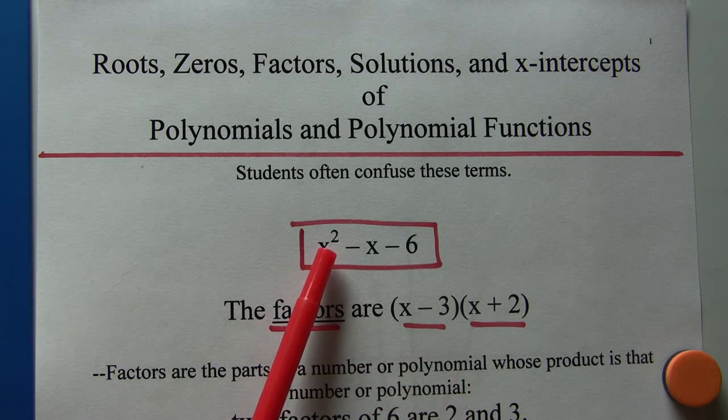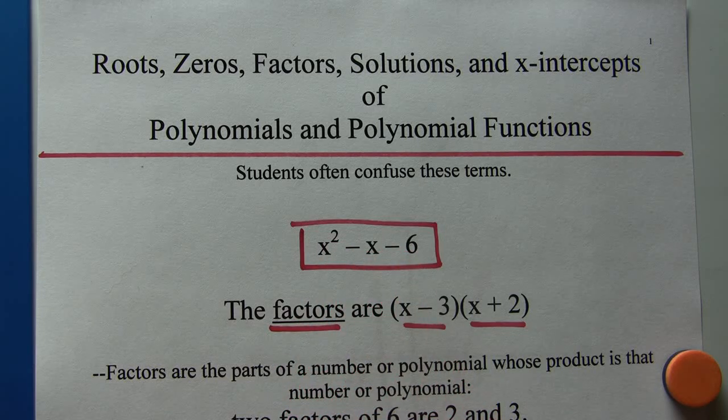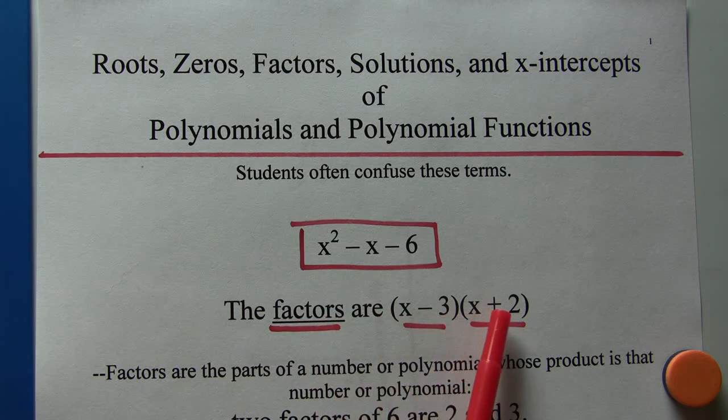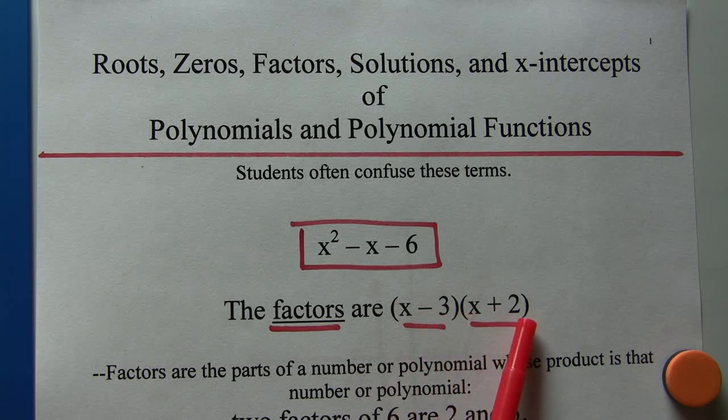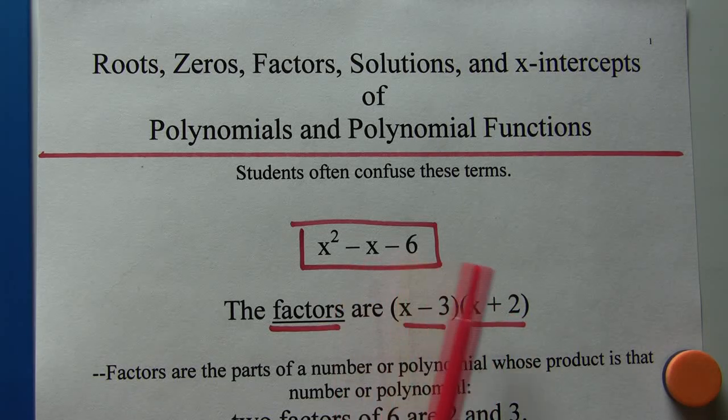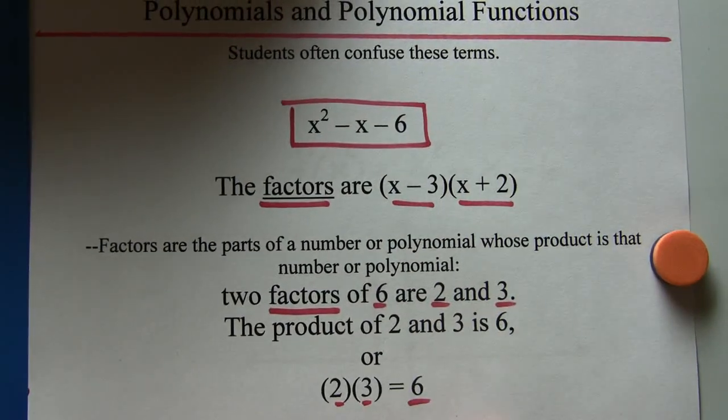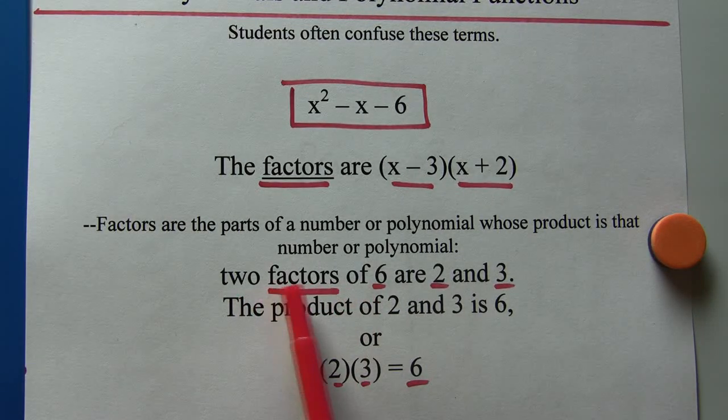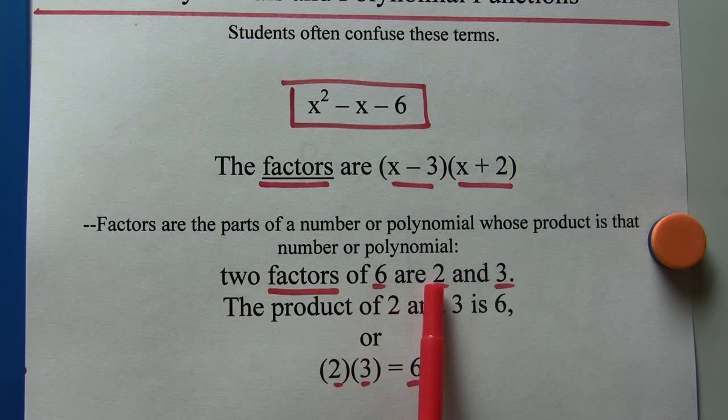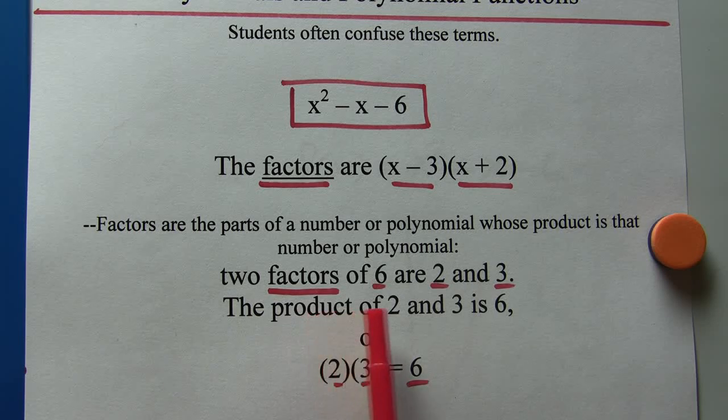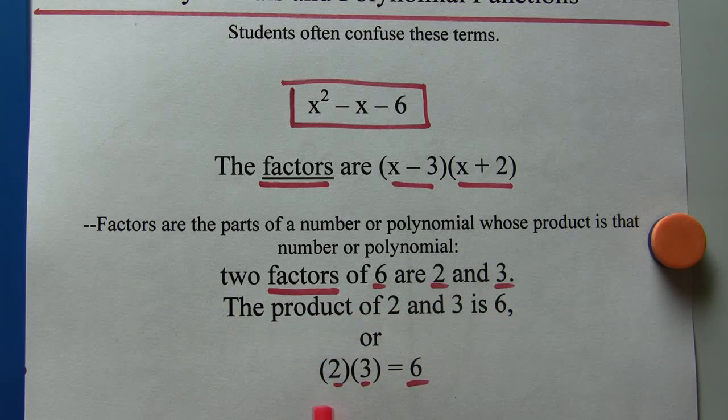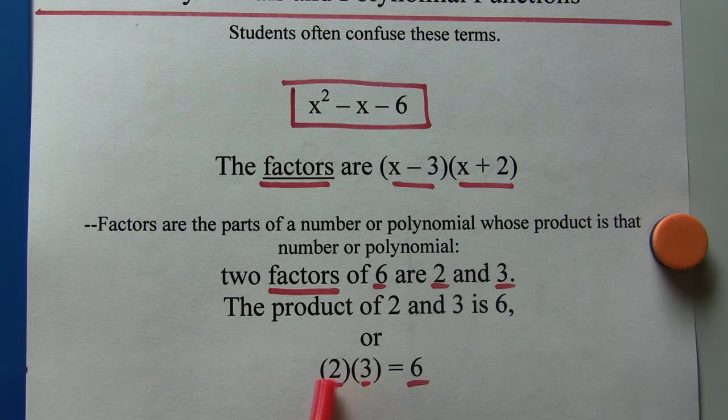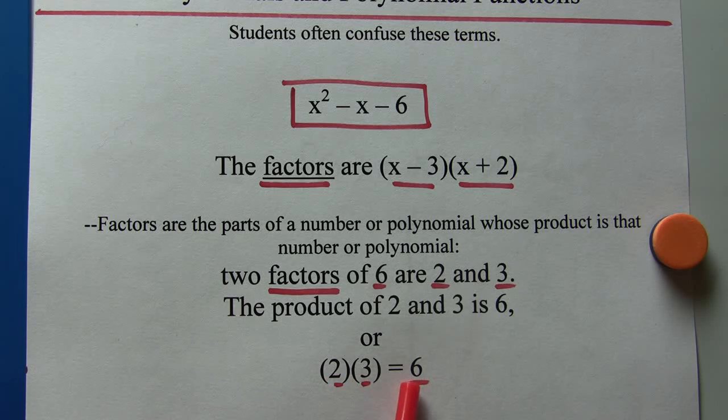We're going to take a very basic polynomial, x squared minus x minus 6. If we were asked to factor this, we can say the factors are the quantity x minus 3 times the quantity x plus 2. These two binomials multiplied together will give us this. Remember back in maybe sixth grade where you learned about factors and factoring, you could look at the number 6. You could say that 2 of the factors of 6 are 2 and 3, because the product of 2 and 3 is 6, or 2 times 3 is 6. So factors are things that when multiplied together give us the number or the polynomial.